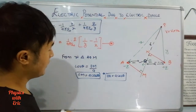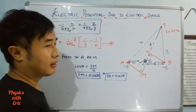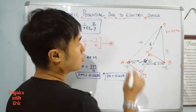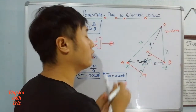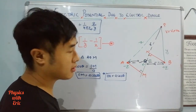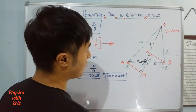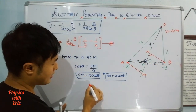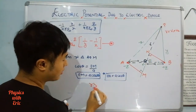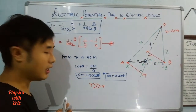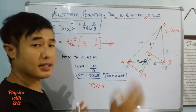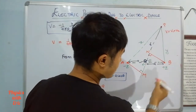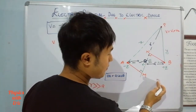Because the dipole length AB is extremely small compared to r, we apply the approximation. The distance PA is nearly equal to PM, and the distance PB is nearly equal to PN. This condition applies since r is much greater than a.